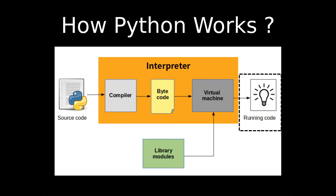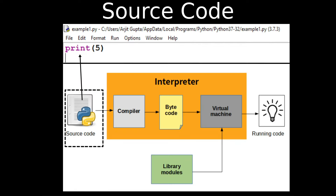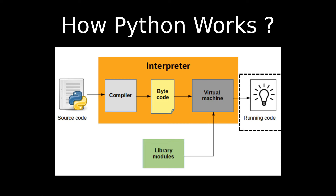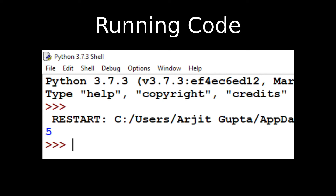Now the fifth and last phase: running code. When we run our code we get the output 5. Remember, our source code was print(5) — when we execute it, we get 5. To recap the whole process: we write a simple source code, the compiler checks for syntax errors and converts it to bytecode, the bytecode is given to the virtual machine, the virtual machine executes it (since our physical CPU cannot), and we get the output. As simple as that.